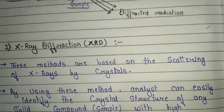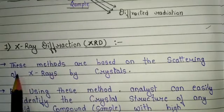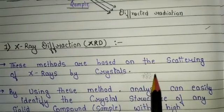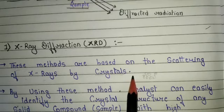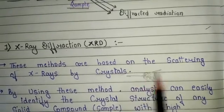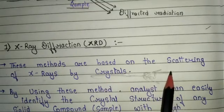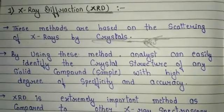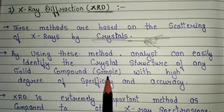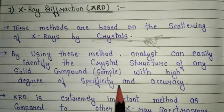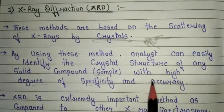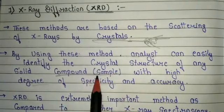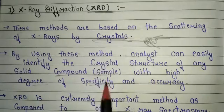X-ray diffraction is also called XRD. This method is based on the scattering of X-rays by crystals — the sample is used in crystal form. When X-rays are scattered by the crystal, the resulting radiations are called X-ray diffraction. Using this method, an analyst can easily identify the crystal structure of any solid compound or sample with a high degree of specificity and accuracy.